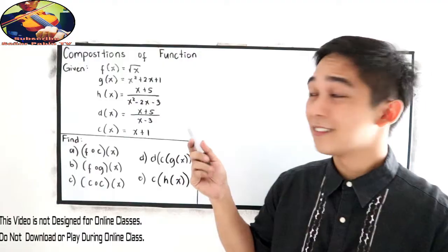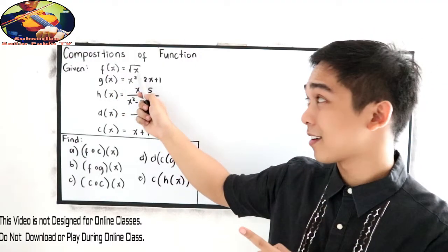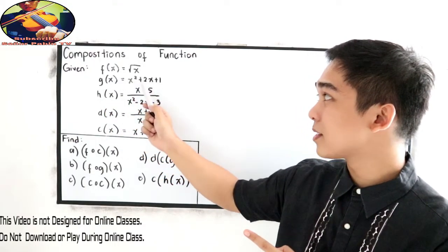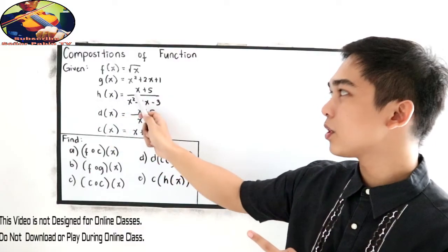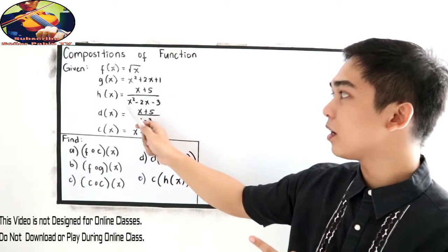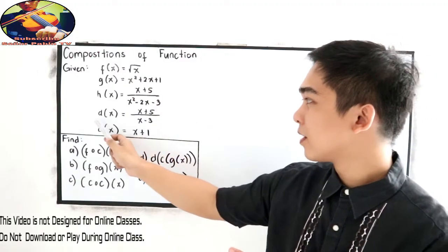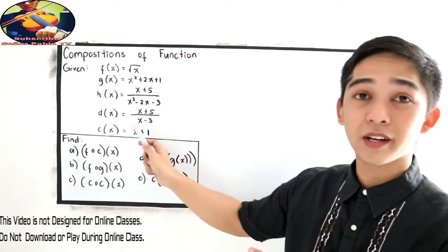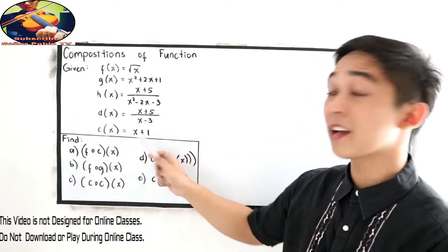Let's say we have the following given. f of x is equal to square root of x, g of x is equal to x squared plus 2x plus 1, h of x is equal to x plus 5 over x squared minus 2x minus 3, d of x is equal to x plus 5 all over x minus 3, and c of x is equal to x plus 1.